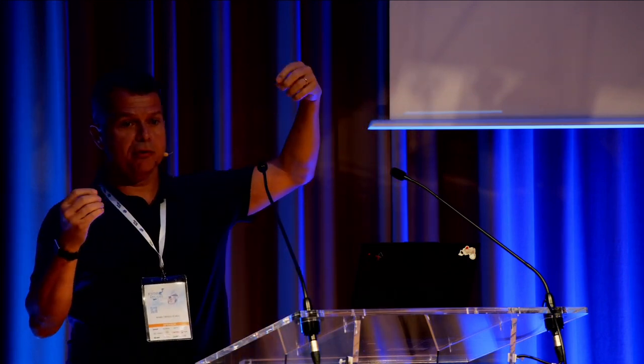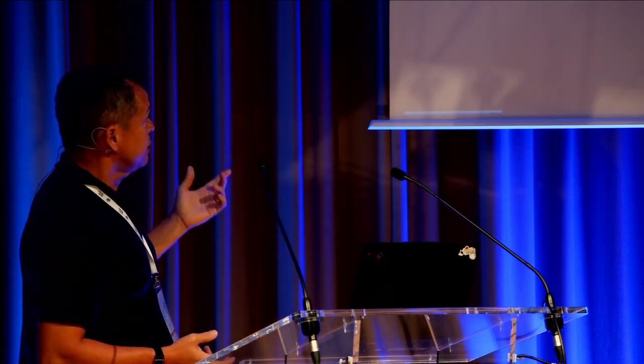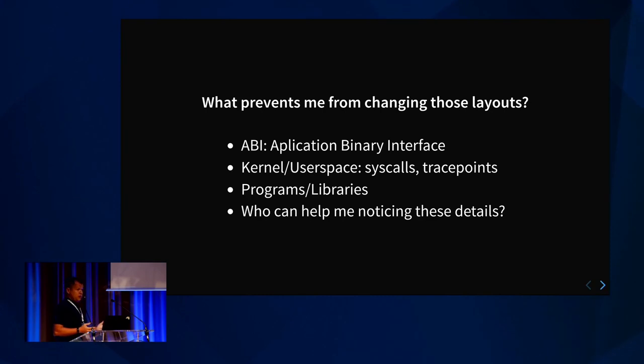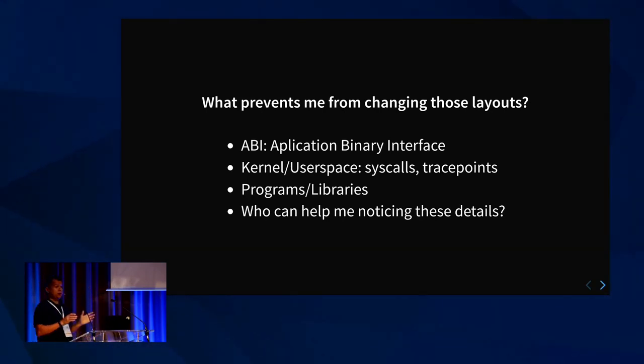That's okay — you can do it most of the time with code. But with data structures you have contracts: application binary interfaces where you have a compiled part and another compiled part, and if you change the layout things will fail and crash. There are ways to try some adjustments like with BPF, but that's not generally available. You have the kernel-userspace contract with syscalls and trace points; they expect a certain layout, and if this layout changes, things break.